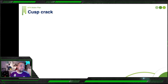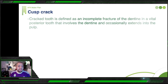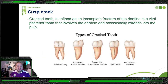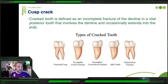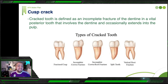What is a cusp crack or cusp fracture? A cracked tooth is defined as an incomplete fracture of the dentin in a vital posterior tooth that involves the dentin and occasionally extends into the pulp, because fractures don't extend to the same amount. Some fractures involve only the cusp — incomplete like a partial fracture or complete going beyond the CEJ into the root. Or the fracture may extend as a vertical line beyond the CEJ, or like a split tooth into two halves, which is the worst and easiest to diagnose.